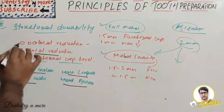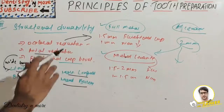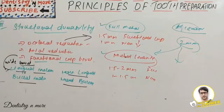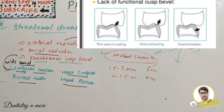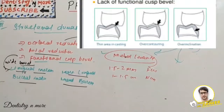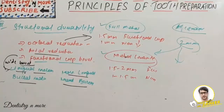Axial reduction: thin walls of casting can result in distortion and over-contouring, which has a disastrous effect on the periodontium. Adequate removal of the axial wall is necessary; insufficient removal can result in distortion of the retainer/restoration or affect the periodontium through over-contouring or under-contouring.